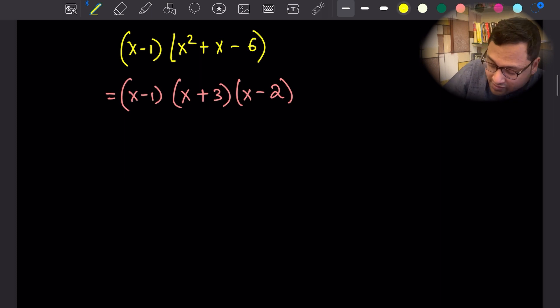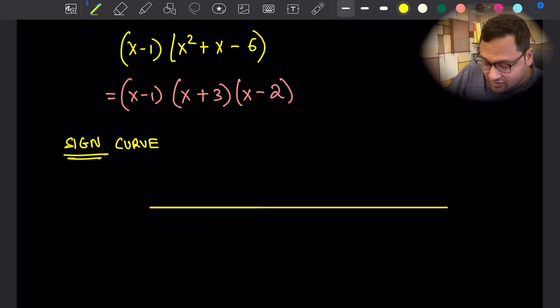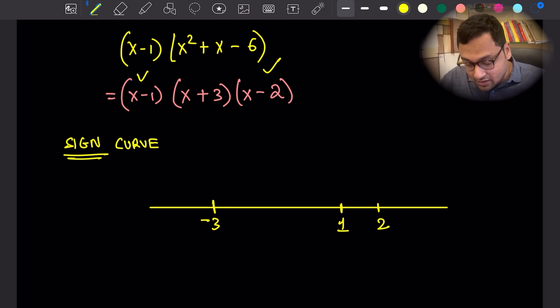What we are going to do is we'll create something called the sign curve. Not the trigonometric one. This is S-I-G-N. Just draw a line just like we have done and mark the roots. This is the number line. Mark the roots on this line. So now that we have marked the roots, we can now draw the sign curve.